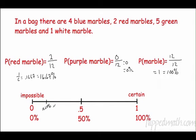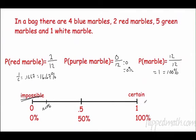If the probability is zero, it's impossible — like grabbing a purple marble. Zero is the lowest probability can go. At 0.5 or 50%, an event is as likely to happen as not. At 100%, it's certain to happen. For example, if you look outside and it's already raining, you can say there's a 100% chance of rain.